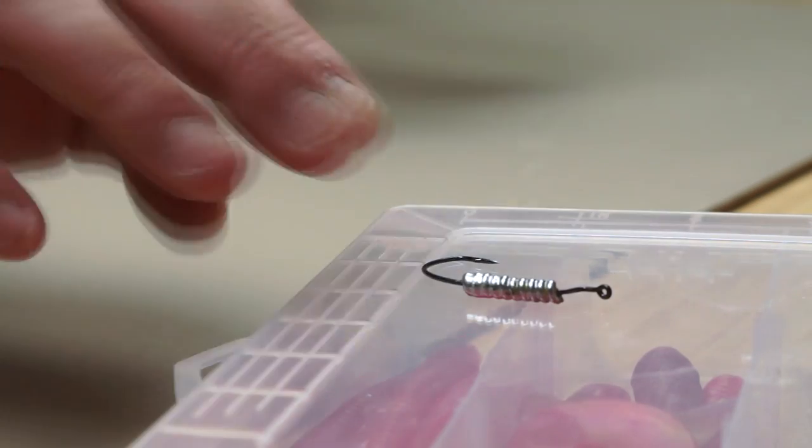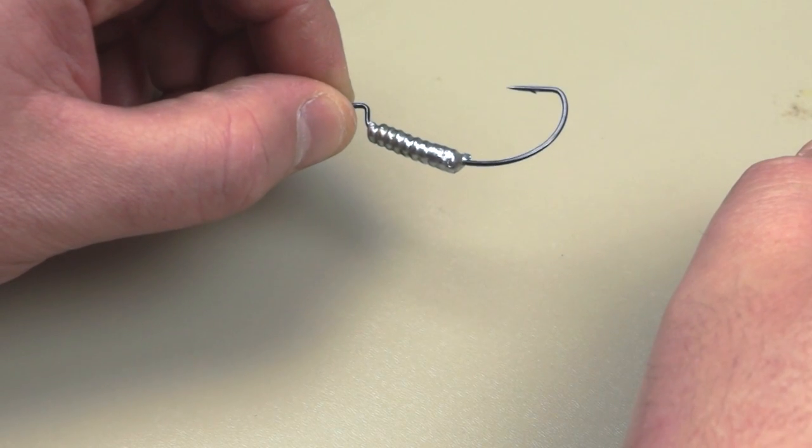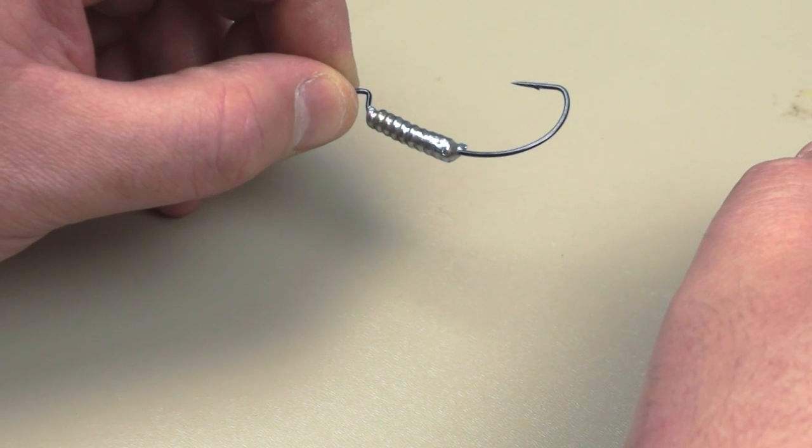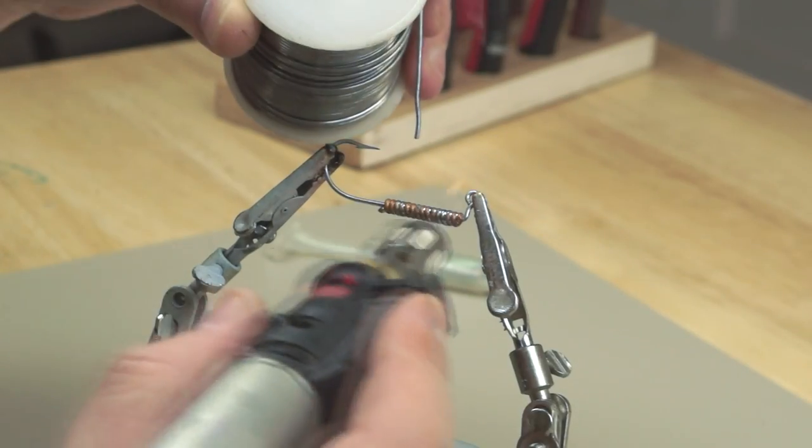To make the setup I'm using a wide gapped worm hook. And as before, I've added some weight by coiling copper around the shank of the hook and then holding it in place with a bit of solder.